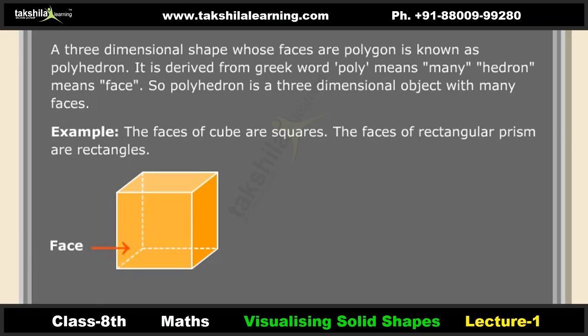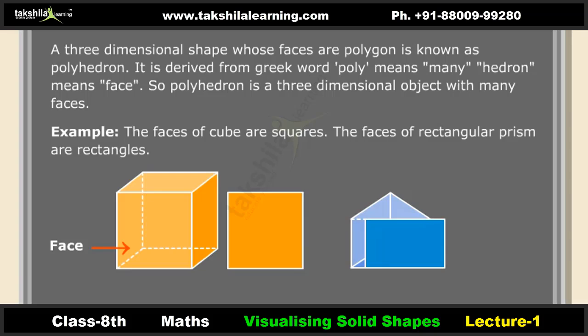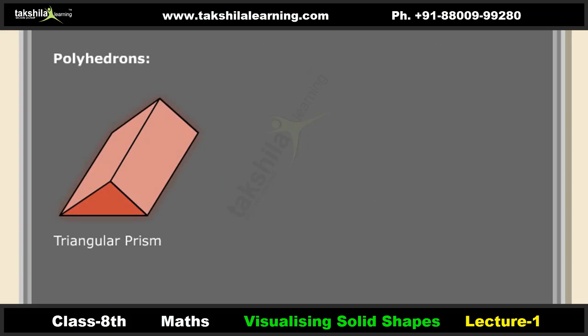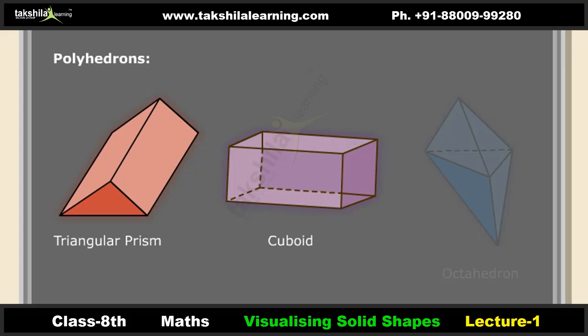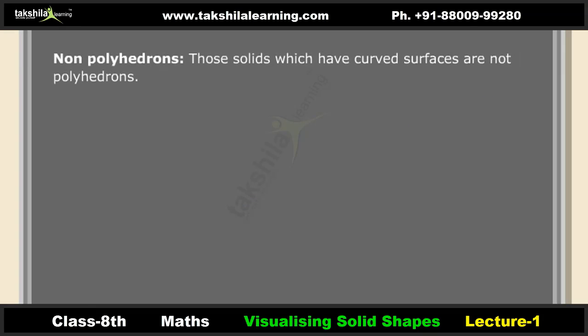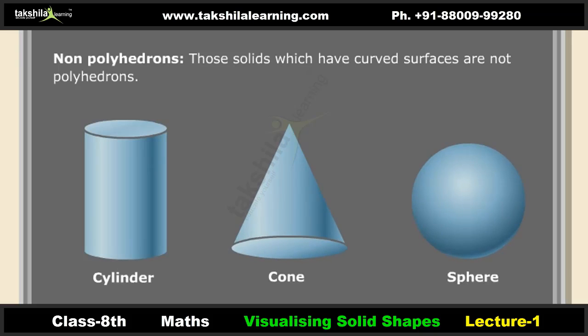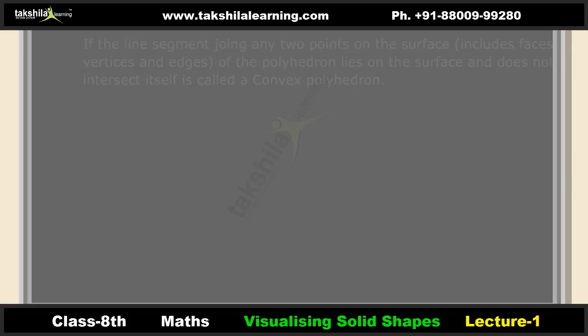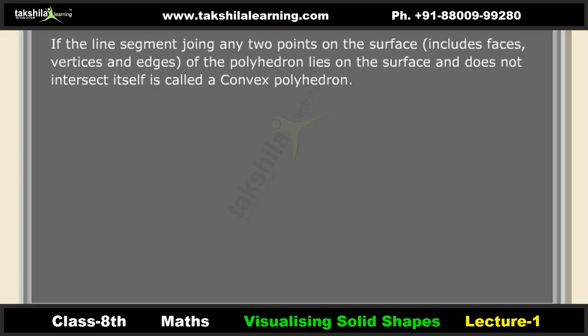The faces of a cube are squares, and the faces of a rectangular prism are rectangles. Examples of polyhedrons include triangular prism, cuboid, and octahedron. Non-polyhedrons are solids which have curved surfaces, such as cylinder, cone, and sphere. A convex polyhedron is one where the line segment joining any two points on the surface lies on the surface and does not intersect itself.